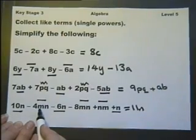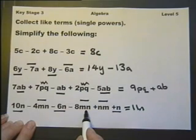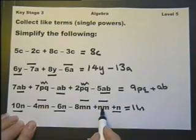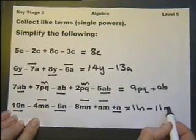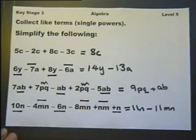We've got minus 4MN, minus 8MN, which is minus 12MN, plus 1MN, which will give us minus 11MN. Collecting Like Terms and Simplifying.